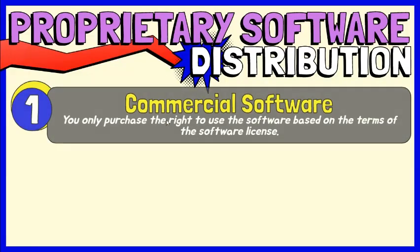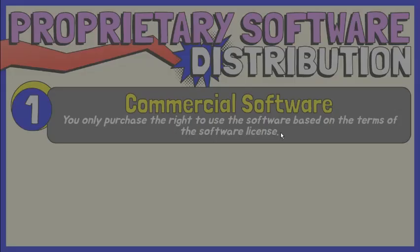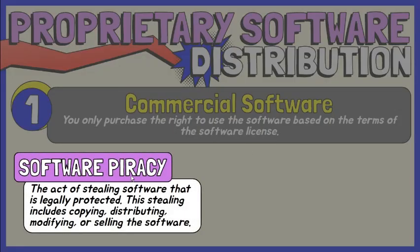Commercial software is copyrighted software that is typically sold in stores or on websites. Although you buy this software, you actually purchase only the right to use it under the terms of the software license. When the terms are violated, software piracy occurs. Software piracy is the act of stealing software that is legally protected. The stealing includes copying, distributing, modifying, or selling the software.